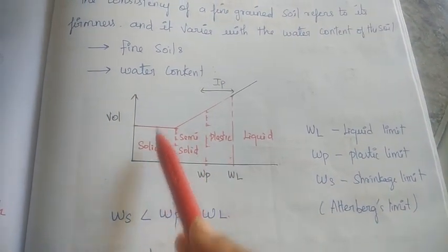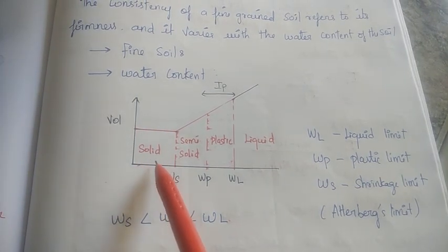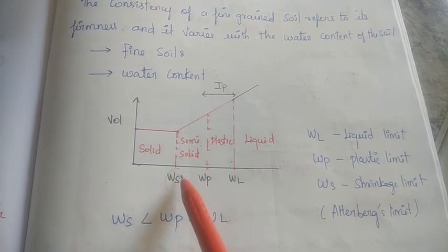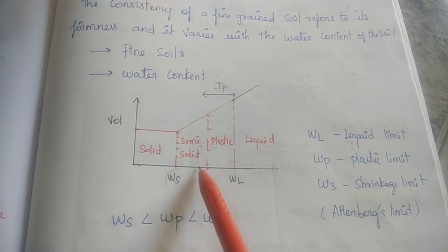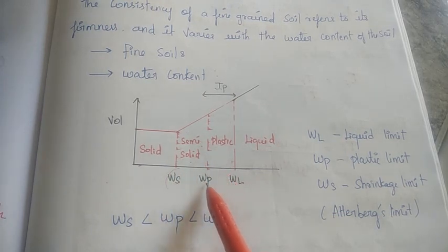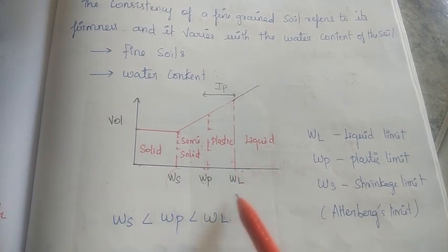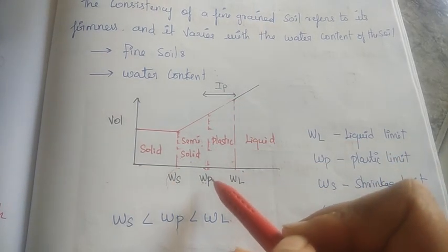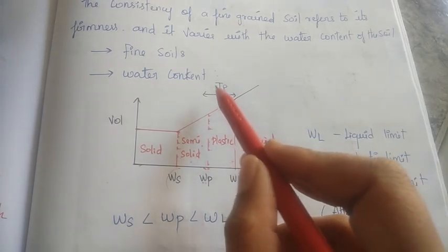If we add volume, we increase the volume. First, the soil is in solid state. If you add water content, it becomes semi-solid. That transition point is Ws — the Shrinkage Water Content (Shrinkage Limit). From semi-solid it becomes plastic — that point is the Plastic Limit. Then the soil becomes liquid — that point is the Liquid Limit.